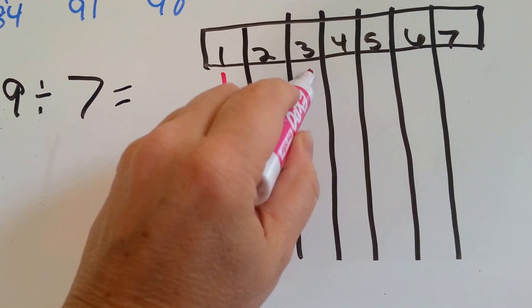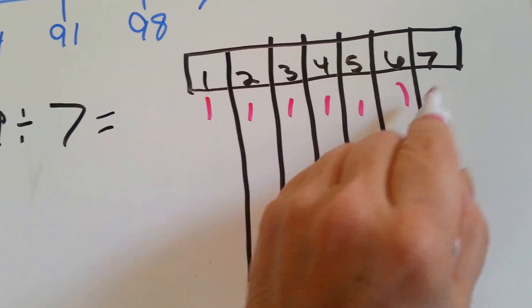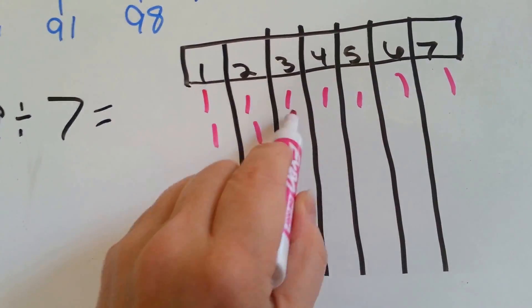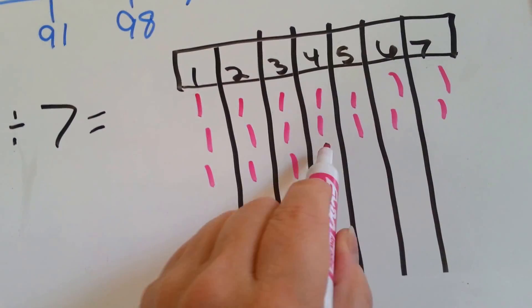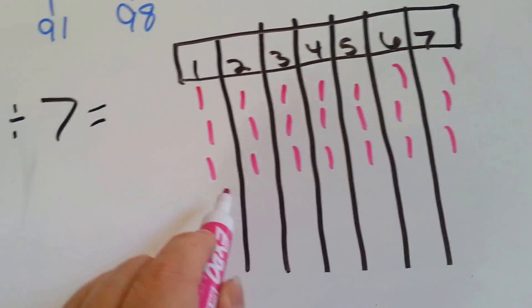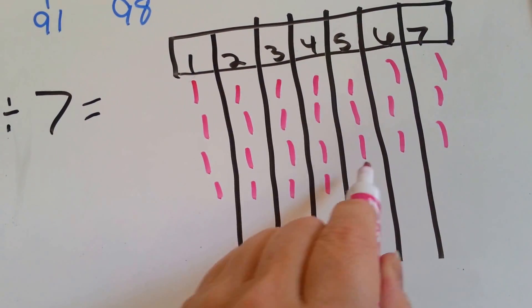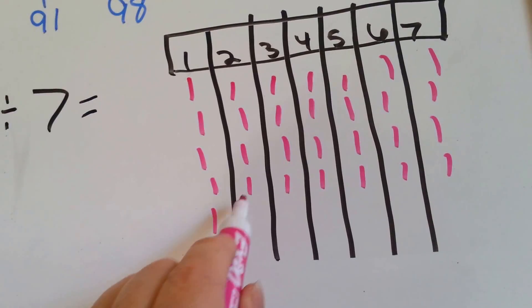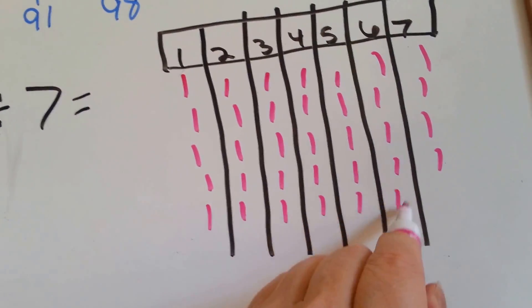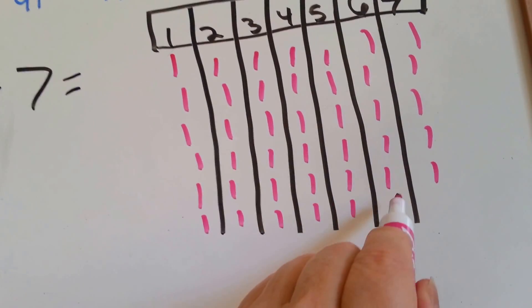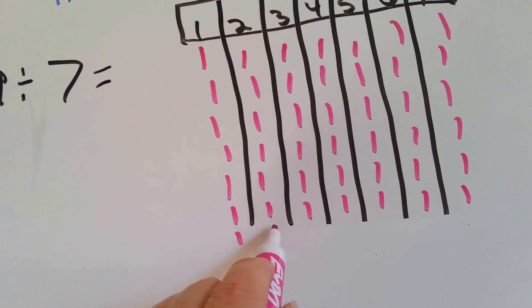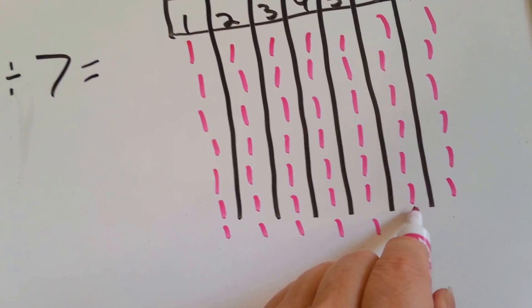1, 2, 3, 4, 5, 6, 7, 8, 9, 10, 11, 12, 13, 14, 15, 16, 17, 18, 19, 20, 21, 22, 23, 24, 25, 26, 27, 28, 29, 30, 31, 32, 33, 34, 35, 36, 37, 38, 39, 40, 41, 42, 43, 44, 45, 46, 47, 48, 49.